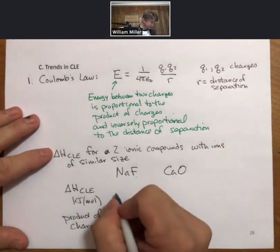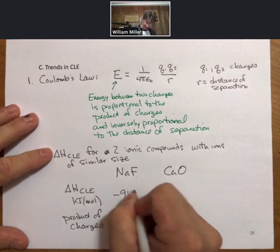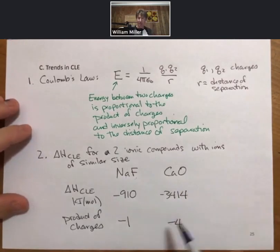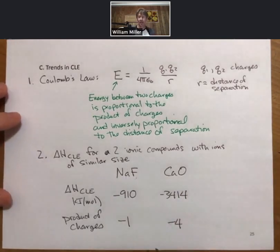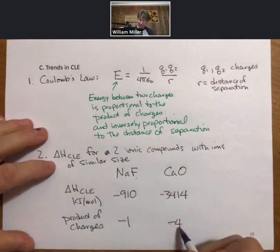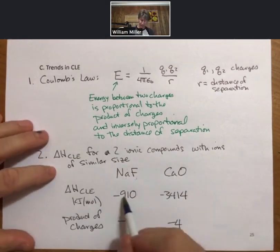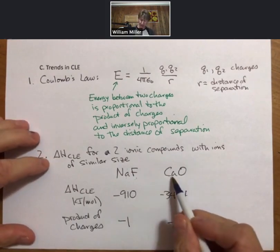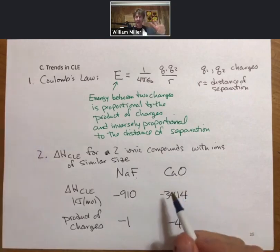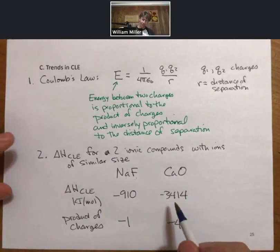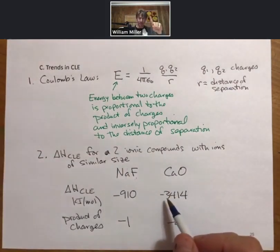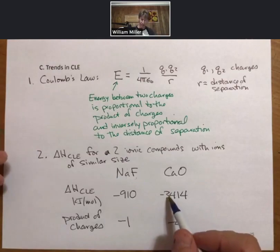And minus 910 for sodium fluoride and minus 3414 for calcium oxide, not exactly four times larger but approximately. And negative meaning that these are both attractive terms, and the attraction between calcium and oxide ions is approximately four times the attraction between sodium and fluoride ions. So that's trend number one.